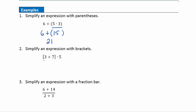Example two: simplify the expression with a bracket. A bracket means the same thing as parentheses. Inside the bracket we have 3 plus 7, so we do that first: 3 plus 7 is 10. Then we multiply 10 times 5, which gives us 50.